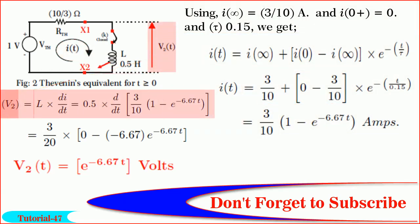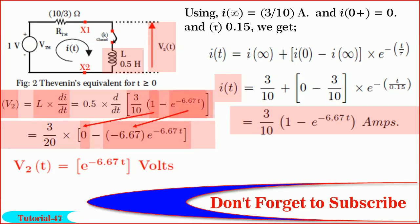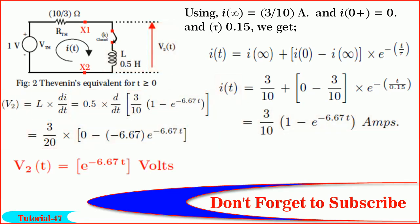But we know V2 is equal to L·di/dt. By substituting the value of L equal to 0.5 henrys and differentiating I(t) and solving it, we get V2(t) is equal to e^(-6.67t). Is it not simple, friends?